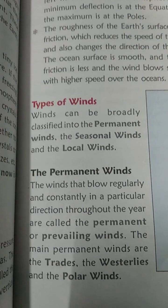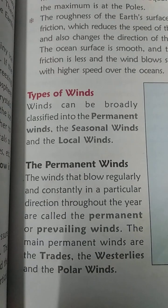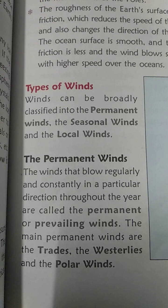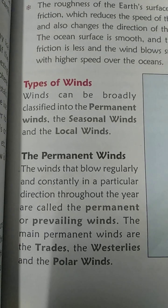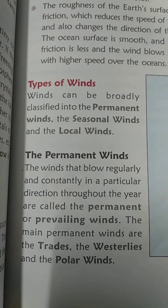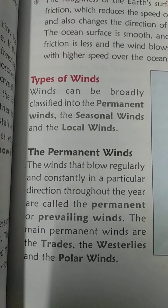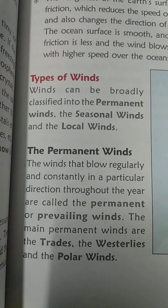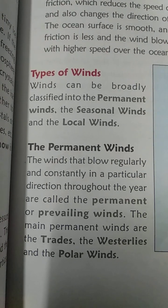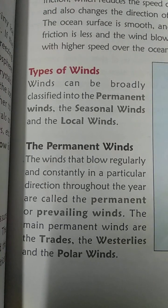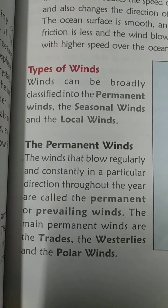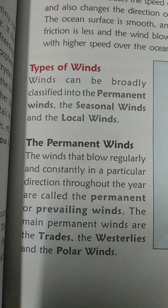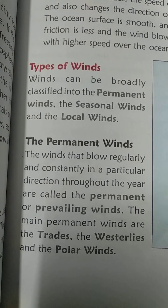Good morning class. Types of winds — winds are broadly classified into permanent winds, seasonal winds, and local winds. The winds that blow regularly and constantly in a particular direction throughout the year are known as permanent winds.